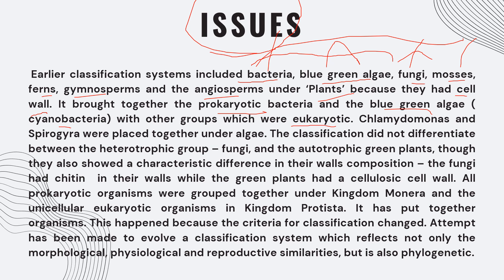The earlier classification did not differentiate between heterotrophic fungi and autotrophic plants, even though fungi are heterotrophic. An attempt has been made to develop a classification system that reflects not only morphological, physiological, and reproductive similarities, but also phylogenetic — that is, evolutionary — relationships.